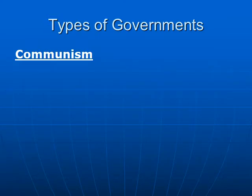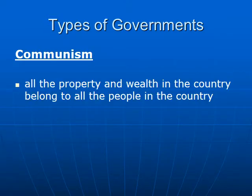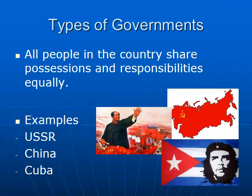Let's start with communism. This is where the property and the wealth in the country belong to all the people. We have no social classes. Some examples could be Russia, China, and Cuba. In these forms of government everybody shares the roles and responsibilities and everybody's supposed to be equal.